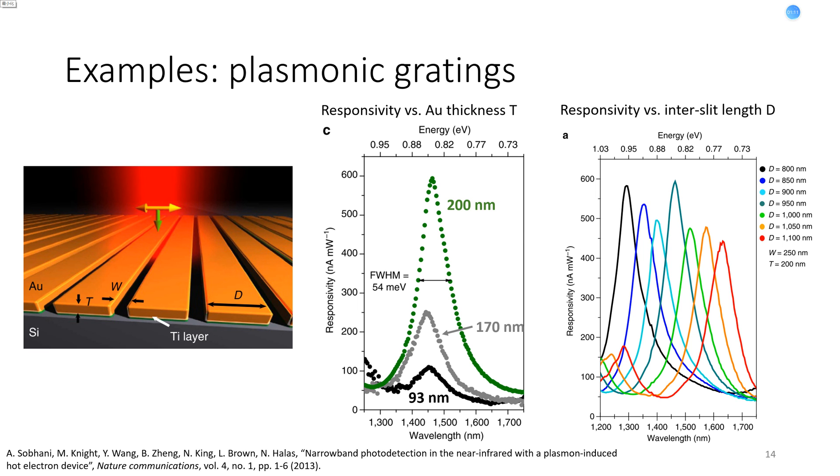Here's another example. Instead of antennas, plasmonic gratings are used. Light incidence from the top, with polarization in this direction. This figure shows that responsivity depends on thickness of gold layer, denoted as T. When T equals 200 nanometers, the responsivity has a high peak. The figure on the right directly tells us that, by changing the inter-slat length denoted as D, we can change the peak of this responsivity to different wavelengths. Thus the photodetector design is flexible. Devices with different geometries can work under different wavelengths.